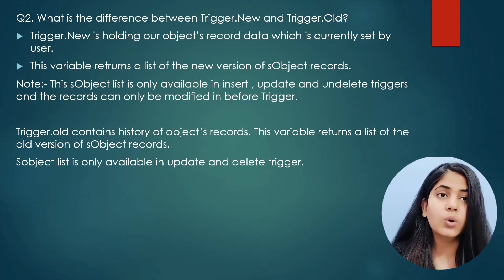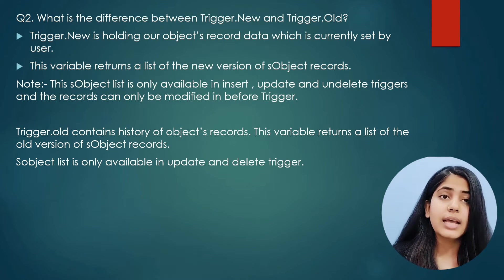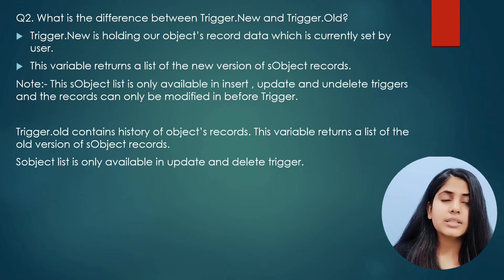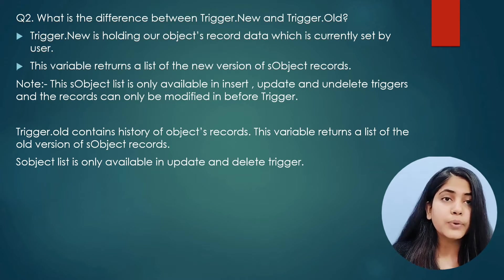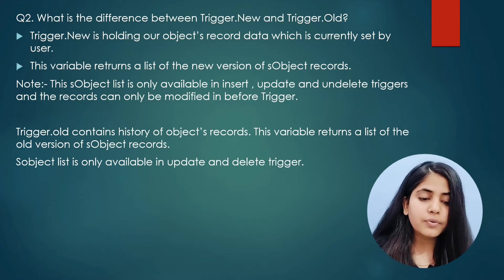The next question is: what is the difference between trigger.new and trigger.old? trigger.new and trigger.old are context variables in Apex Triggers. trigger.new holds the object records data currently set by the user and returns the new version of the sObject. When using trigger.new, keep in mind that it is only available in insert, update, and undelete triggers, and records can only be modified in before triggers — you cannot modify records in after triggers.